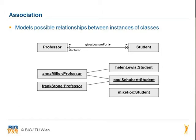The association models possible relationships between instances of classes. In the class diagram you see the relationship between the classes professor and student. The student has null to infinite relationships to professor and the attribute is called lecturer. In the object diagram there is the object Mike Fox who does not have any relationship to any professor. The professor has no, one, or many relationships to any student. This association is called 'gives lecture four'.